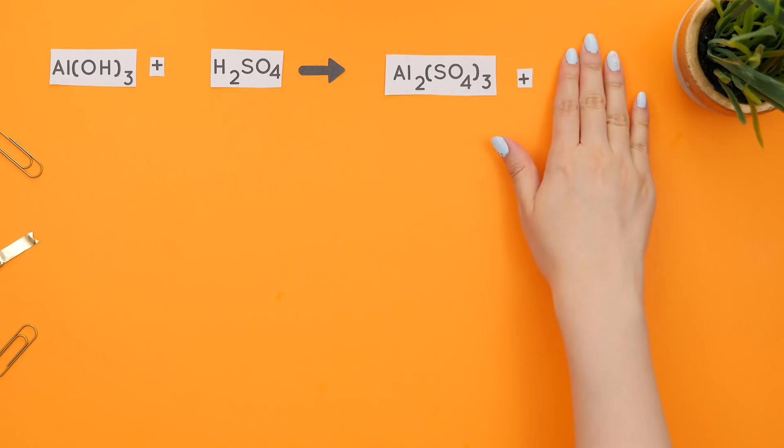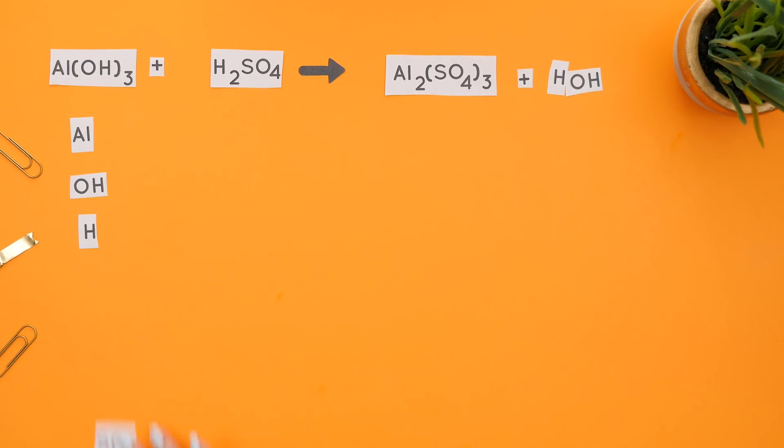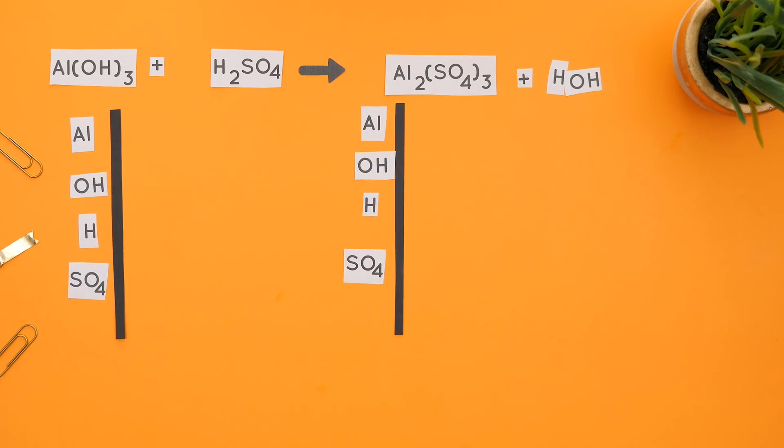We'll rewrite H2O as HOH. Now let's list all the single elements and polyatomic ions on each side in the same order. Count how many of each element or polyatomic ion there is on either side. On the reactant side, there's one aluminum. Now this three subscript means there's three OHs. This two subscript means there's two Hs. And there's only one SO4 since there are no parentheses.